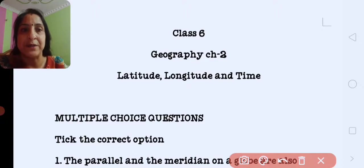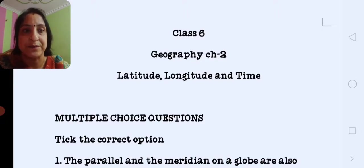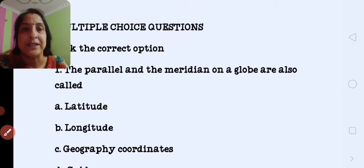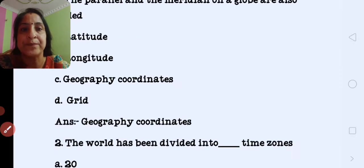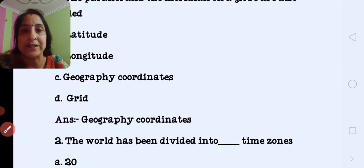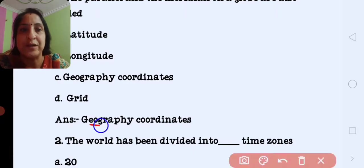First we discuss the multiple choice question answer. First question is the parallel and the meridian on a globe are called: latitude, longitude, geographical coordinates, or grid? The correct answer is geographical coordinates.